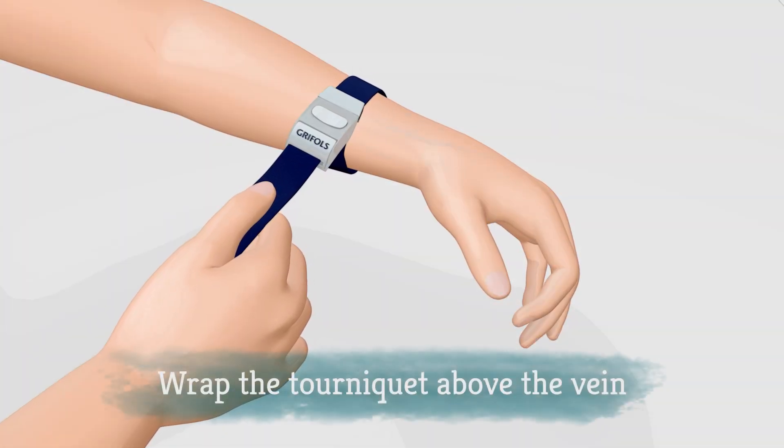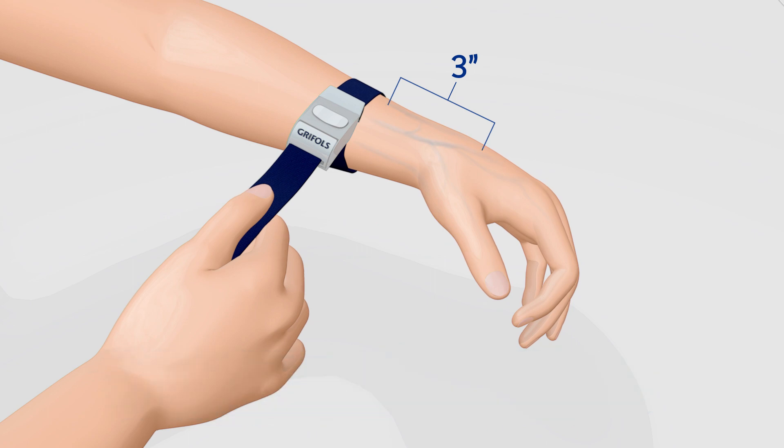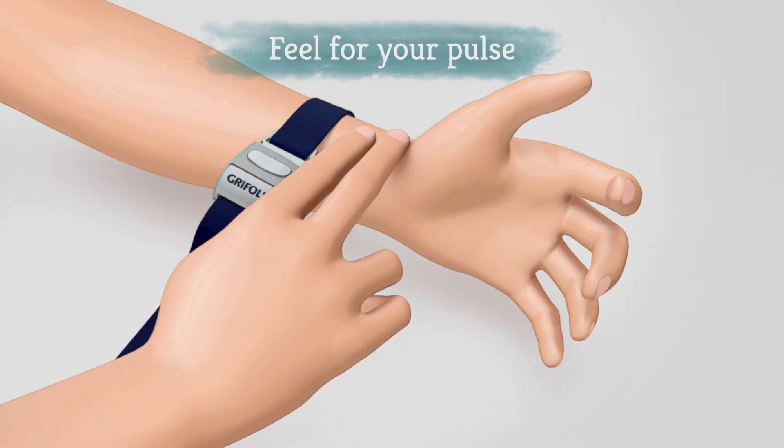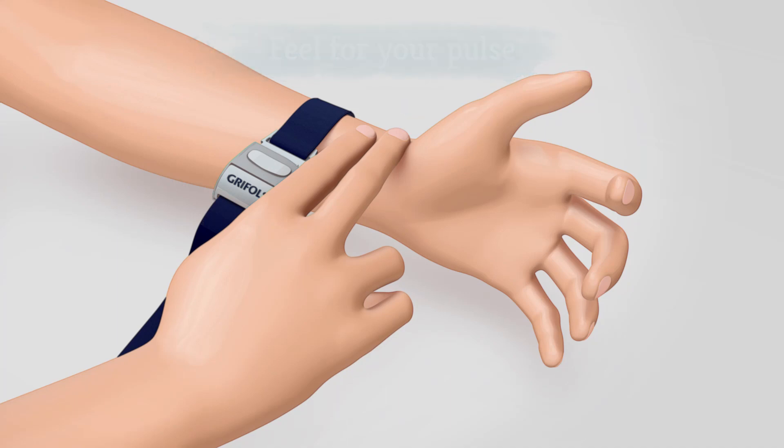Wrap the tourniquet around your arm or wrist about 3 inches above the vein you will use for the infusion. Make sure you can feel your pulse at your wrist or inner elbow, or adjust the tourniquet until you can.